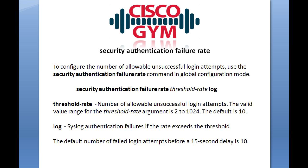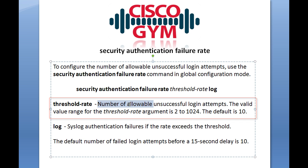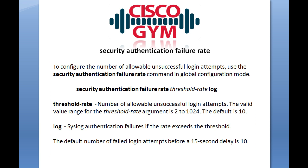Security Authentication Failure Rate — what this command is going to be is a global configuration command that takes a single argument, and that argument is going to be the Threshold Rate. The Threshold Rate is the number of allowable unsuccessful login attempts, which is just a verbose way of saying number of failed login attempts. You can specify this to be anywhere from 2 to 1,024.